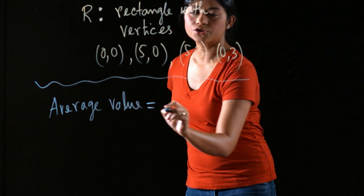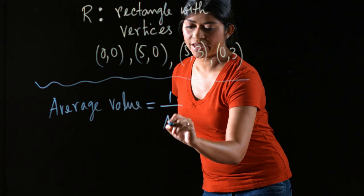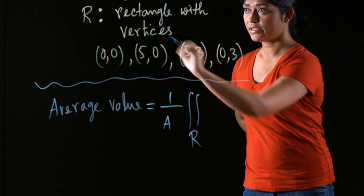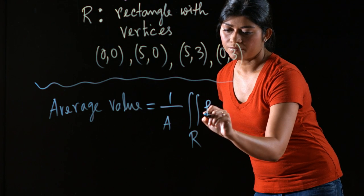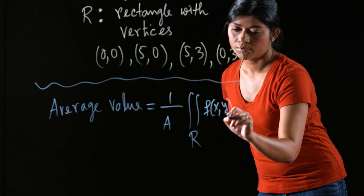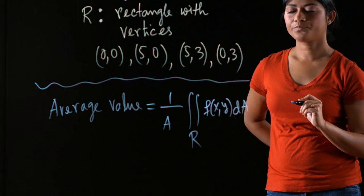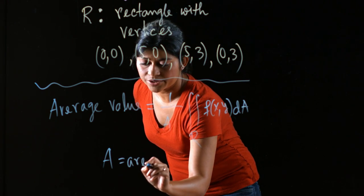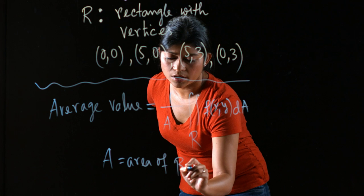So average value of a function is 1 over A times the double integral over R, the same region R, of the function times dA, where this A is the area of the region R.